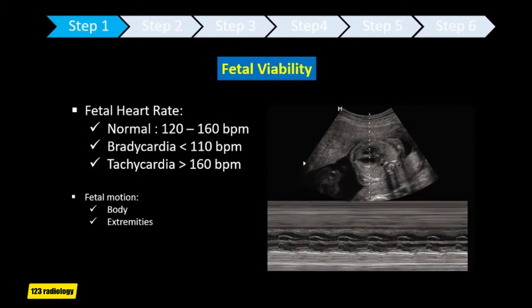Fetal viability is the first thing to look for. The normal fetal heart rate is between 120–160 beats per minute, depending on fetal activity. Abnormal heart rate and rhythm should be reported. Fetal bradycardia is considered when fetal heart rate is less than 110 beats per minute, and fetal tachycardia when it is more than 160 beats per minute. During the examination, you must see normal fetal motion of the body and extremities.